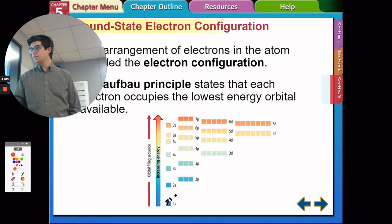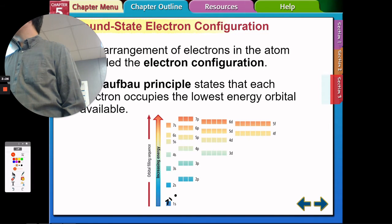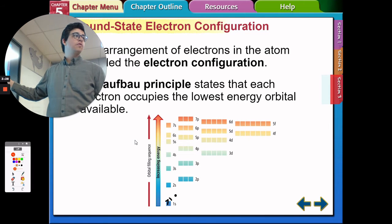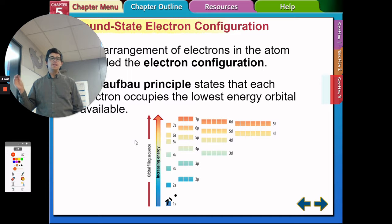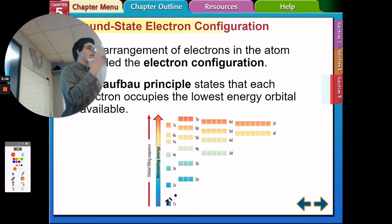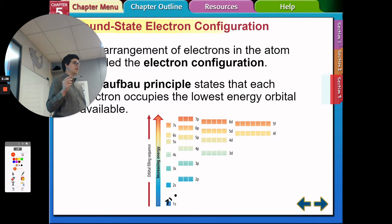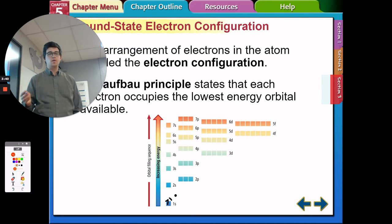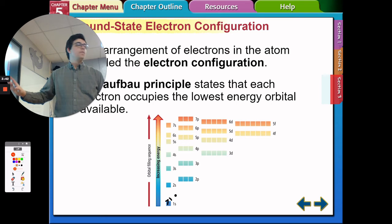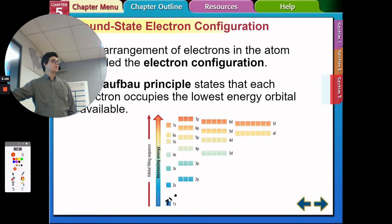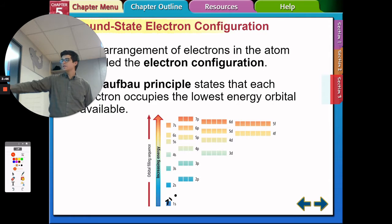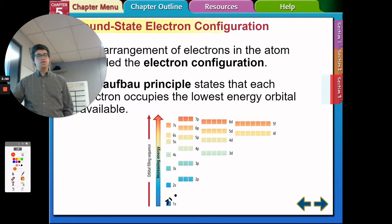This is called the Aufbau principle — you should write this down. The Aufbau principle states that every electron occupies the lowest energy level orbital it possibly can. Effectively, since hydrogen only has one electron, it doesn't go in randomly; it specifically goes into the 1s orbital, which is the lowest.